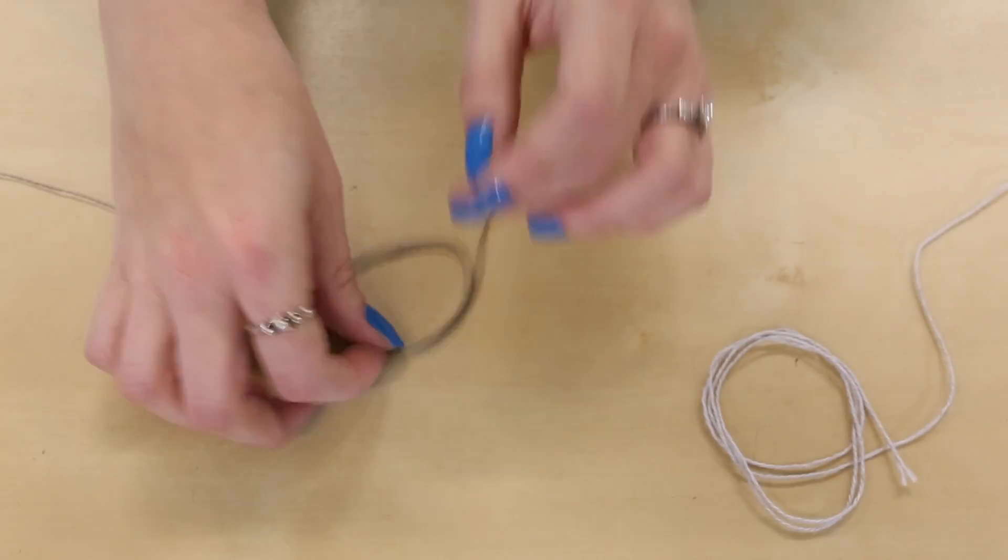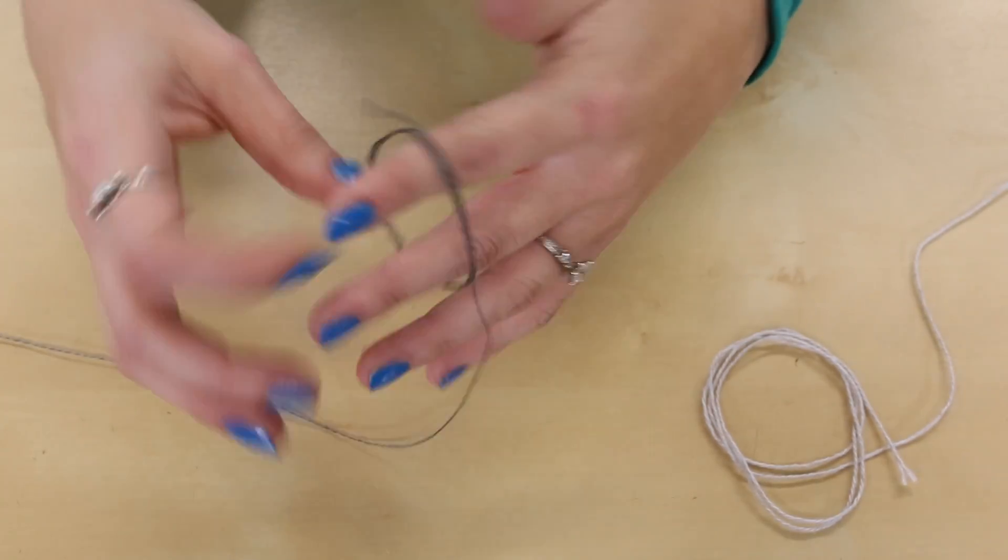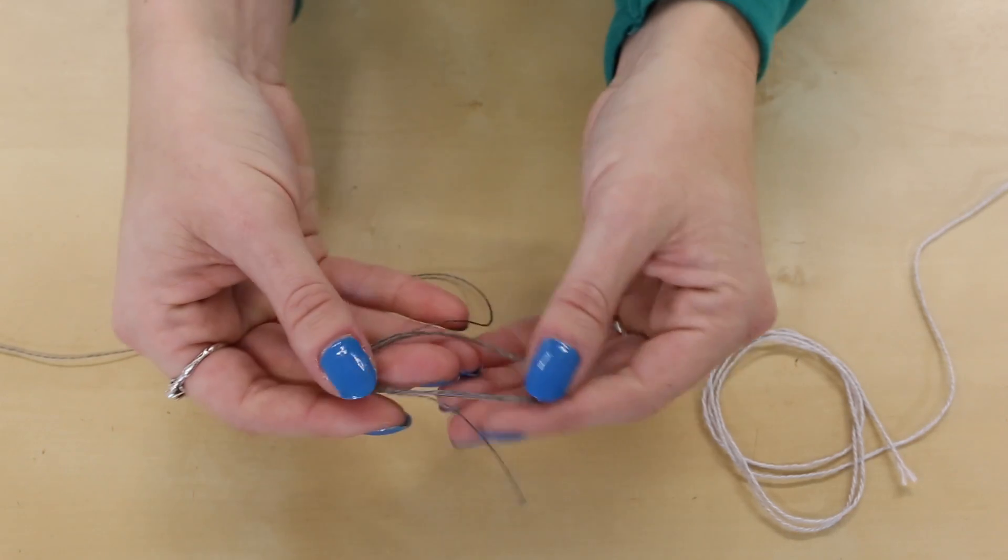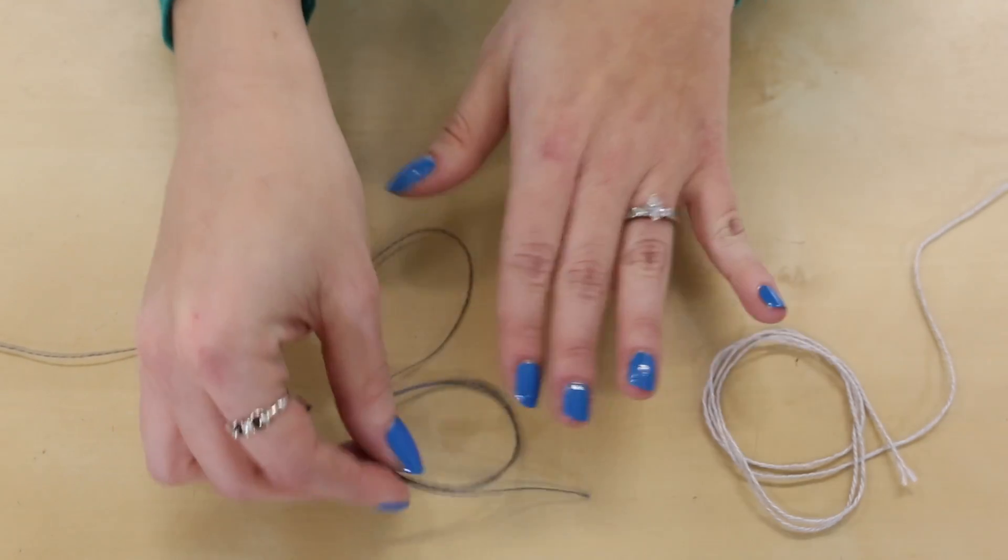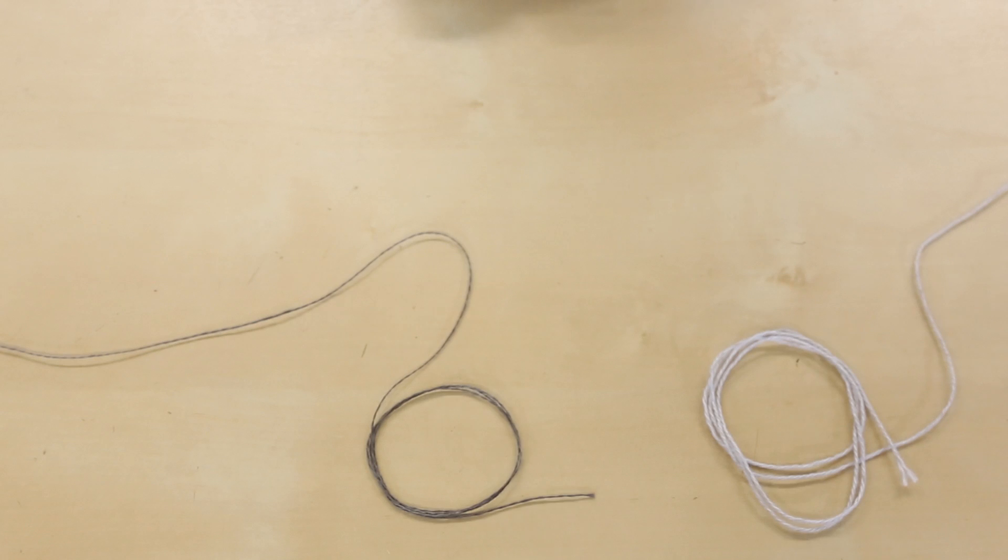Conductive yarn is very different from conductive thread. It's very high resistance, so it's not a great way to directly connect components unless they're very close together. That resistance makes it great for sensing.